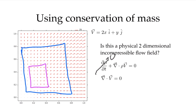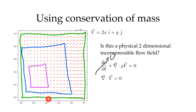Very clearly, if I draw this box at the boundaries of our domain, there is flow going out this surface and flow going out this surface, but nothing coming in. So we have only flow going out and no flow coming in.